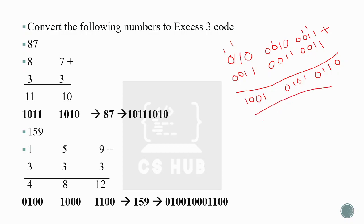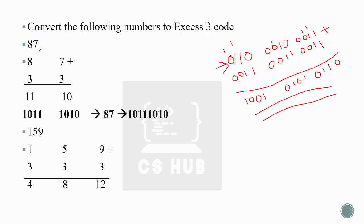This is how to convert a BCD number into Excess-3 code. If given a decimal number, add three to each digit and convert to binary. If given a binary number, find the decimal equivalent and repeat the process. If given a BCD number, add 0011 to each four-bit group to get the Excess-3 equivalent.